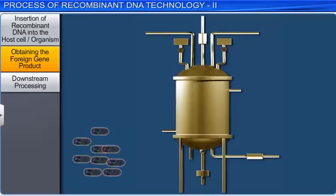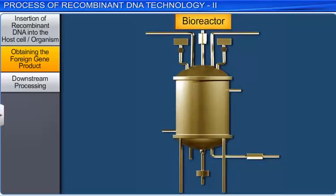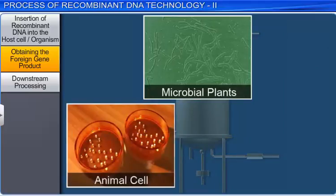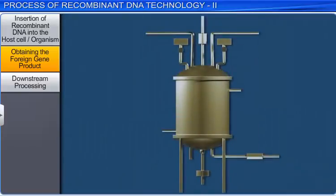To produce biomass in even larger quantities, a bioreactor is used. It is a vessel used to carry out a chemical process. A bioreactor uses raw material such as microbial, plant, animal, or human cells, and converts it into products such as enzymes. About a hundred to a thousand liters of culture can be processed in such units.